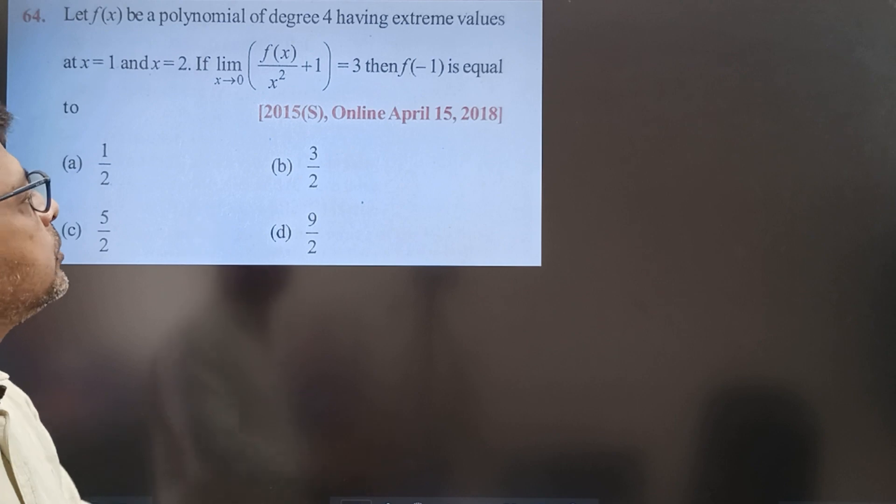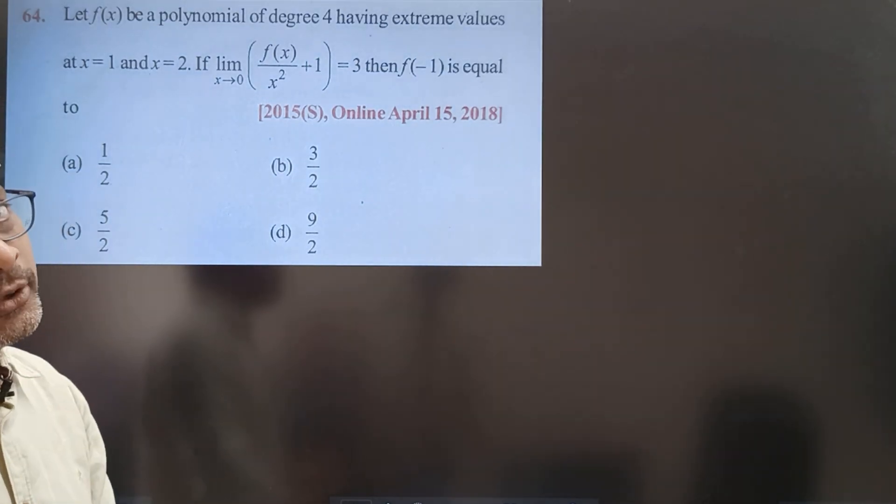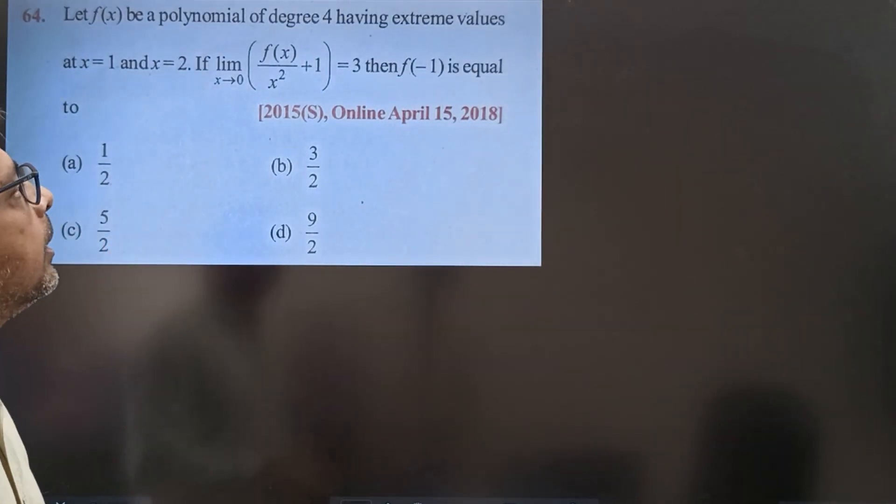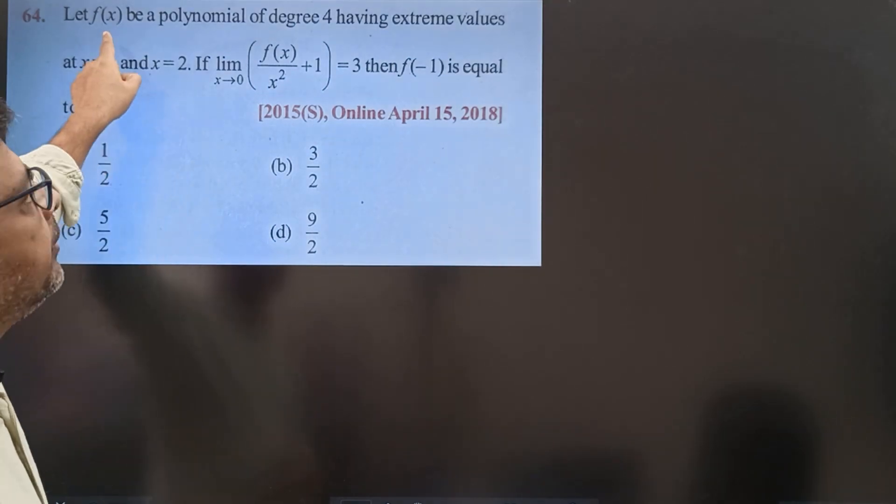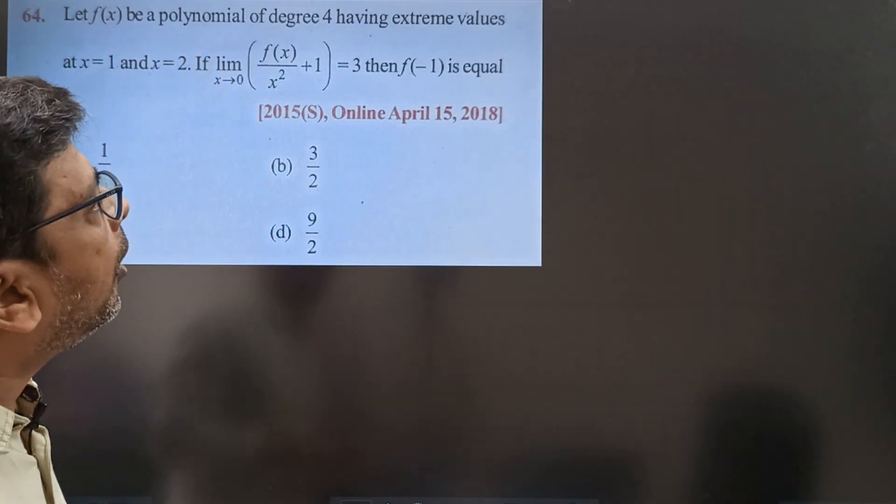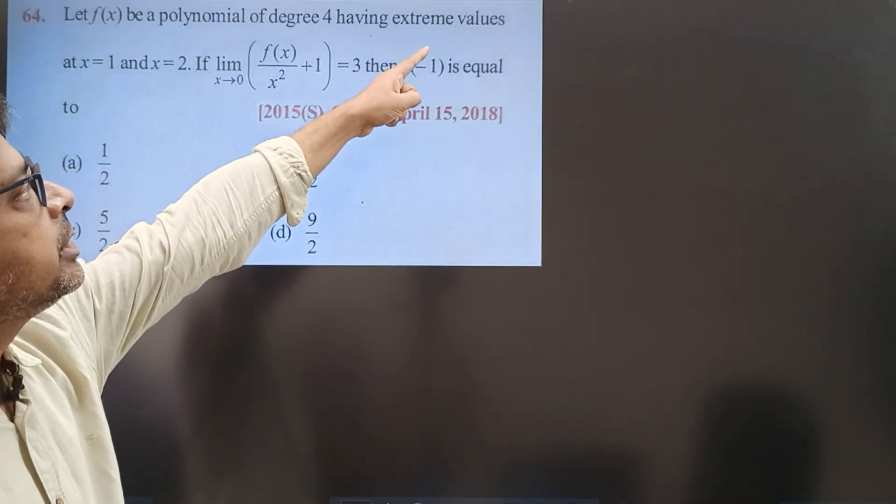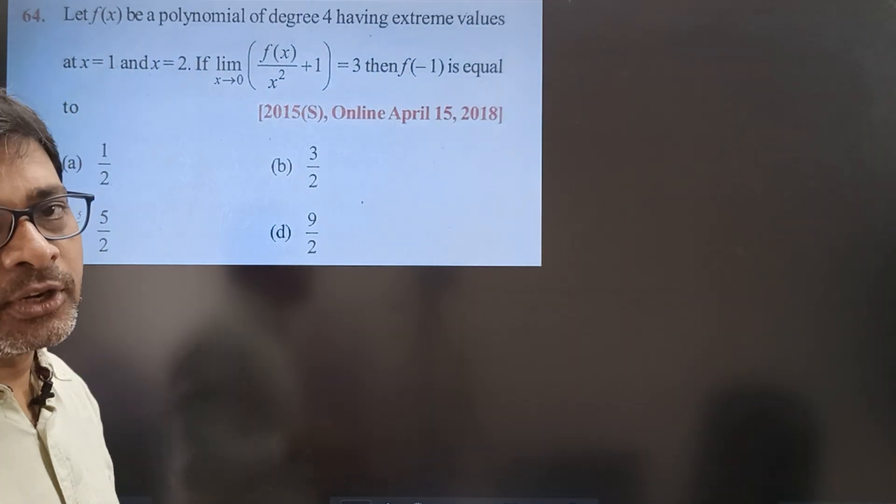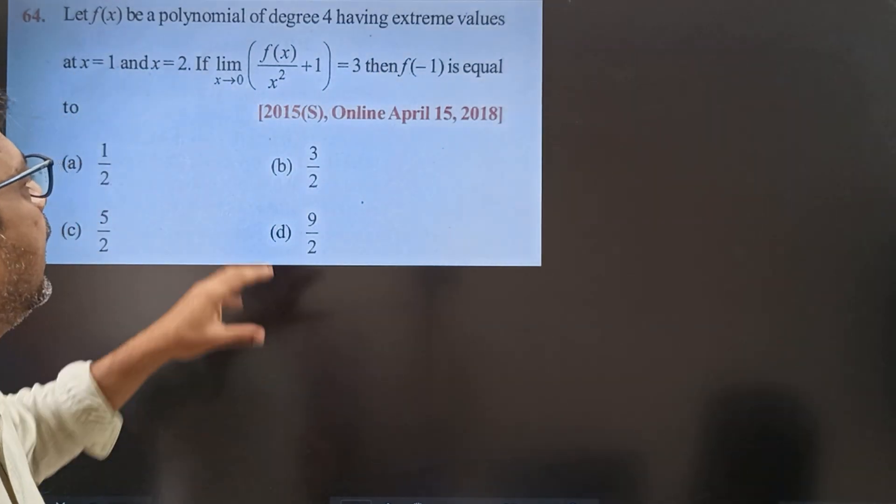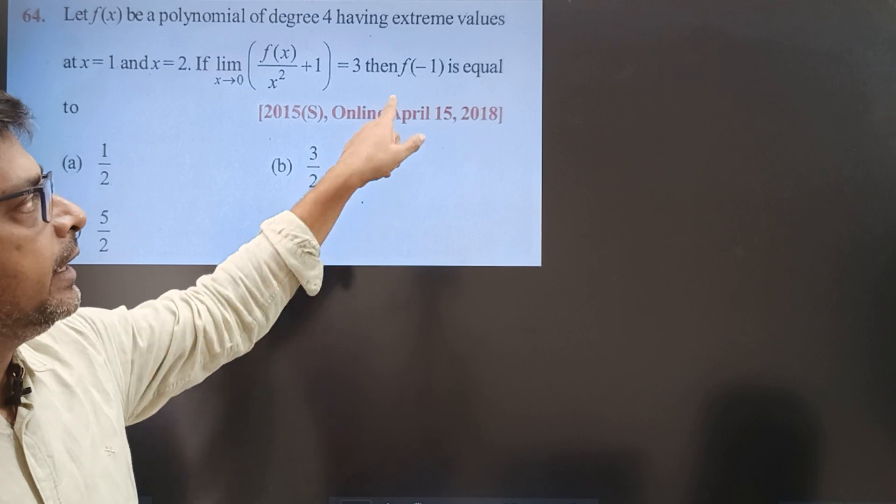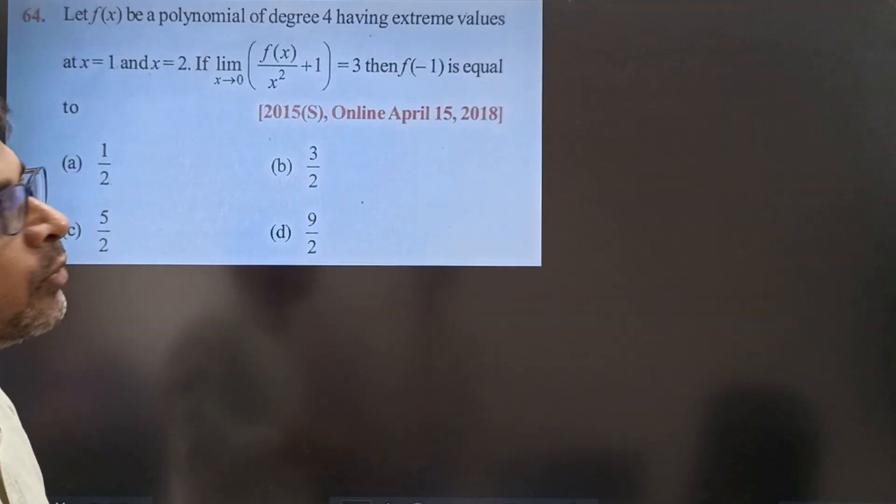This is April 15, 2018. And in 2015, we have two questions. Let f(x) be a polynomial of degree 4 having extreme values at x = 1 and x = 2, and limit this one is equal to 3. Then f(-1) is equal to?